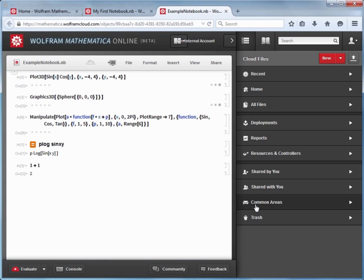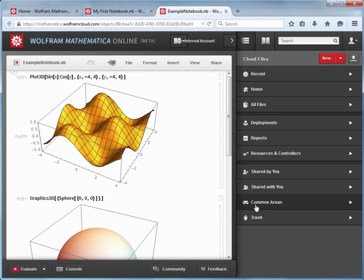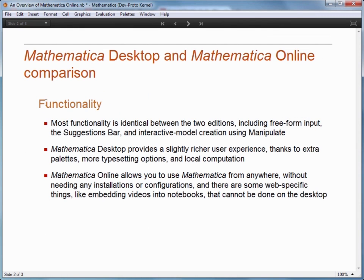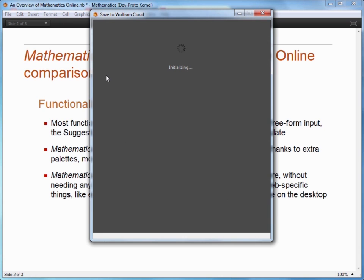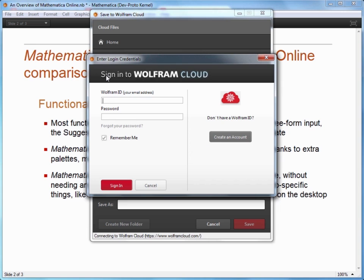Another way is from Mathematica on the desktop. If you have Mathematica 10 or a later version, so if I switch to Mathematica on the desktop, I can go to the file menu and choose Save to Wolfram Cloud. This opens a window that lets you save the file or create a new folder in which to save the file. This is another very convenient way to move your files to the cloud.